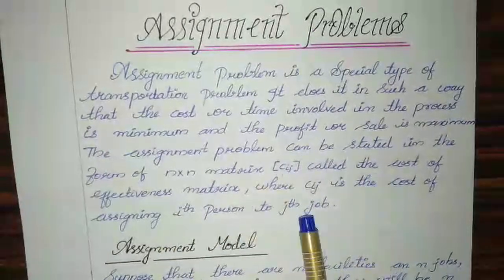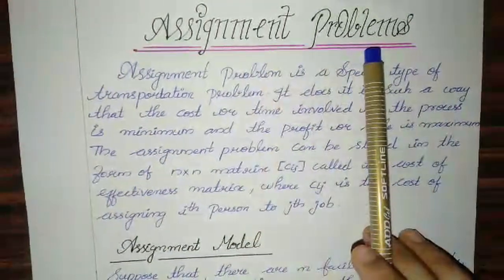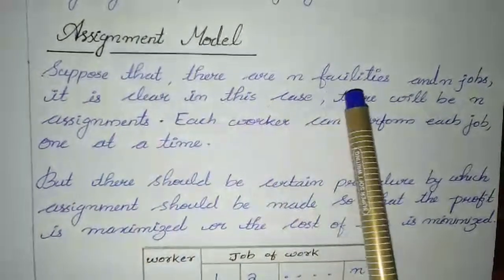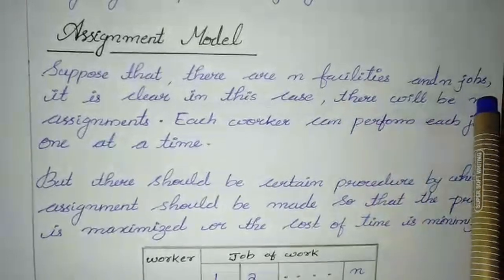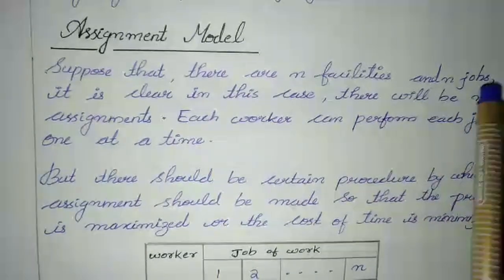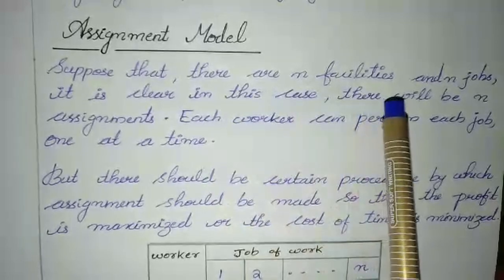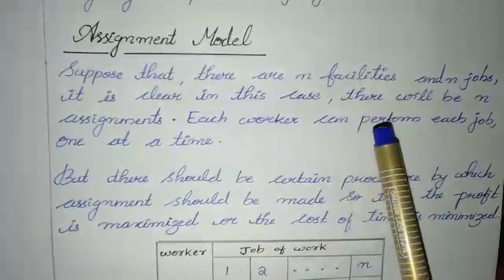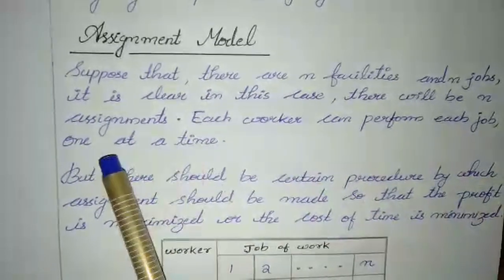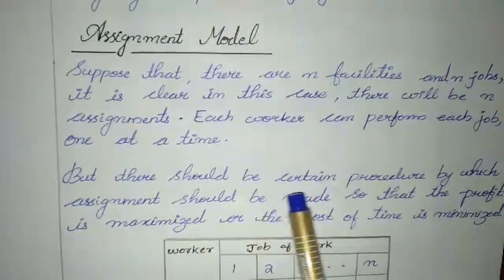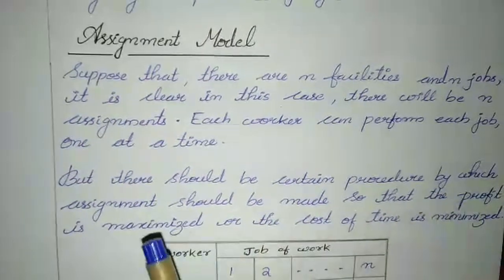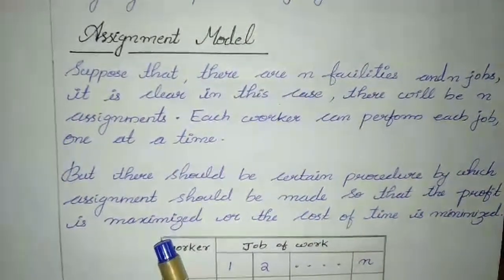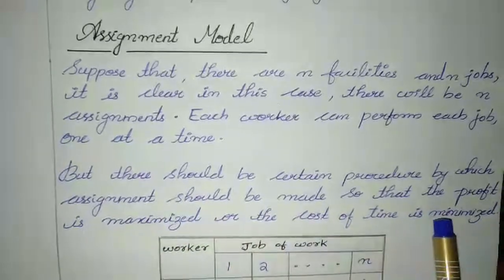In the assignment model, suppose there are n facilities and n jobs available in a factory or industry. There will be n assignments where each worker can perform each job one at a time. There should be a certain procedure by which assignments are made so that the total profit is maximized or the cost and time is minimized.